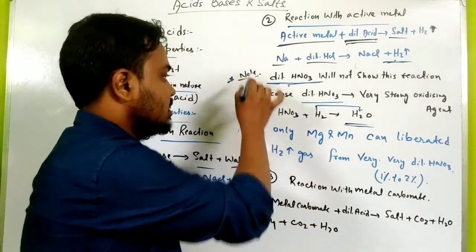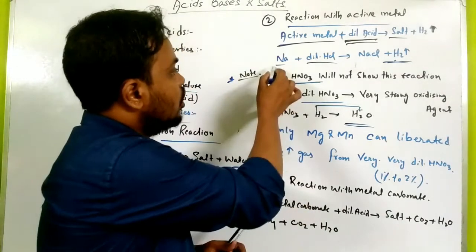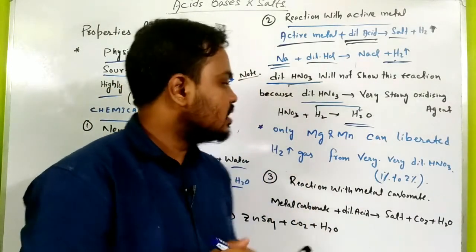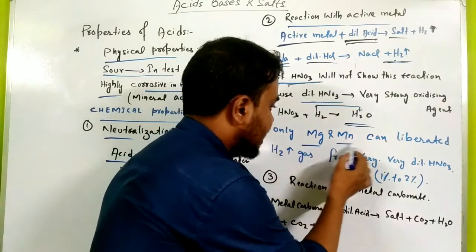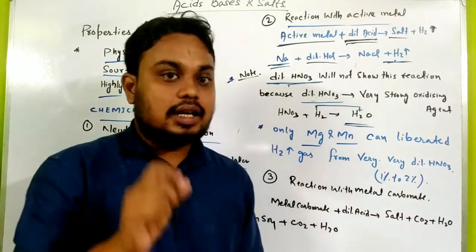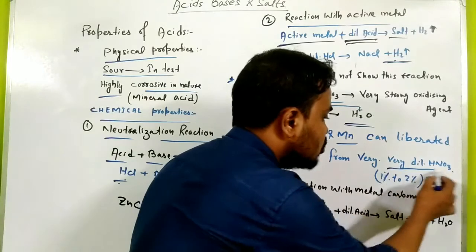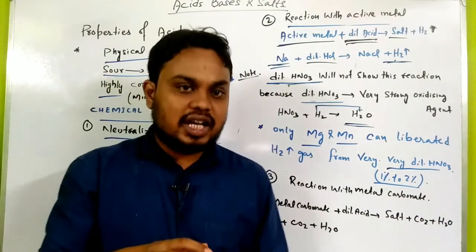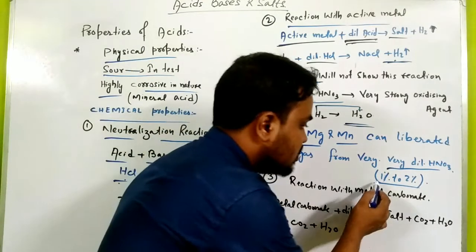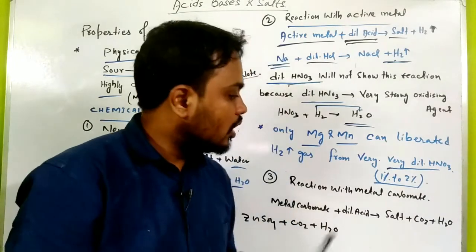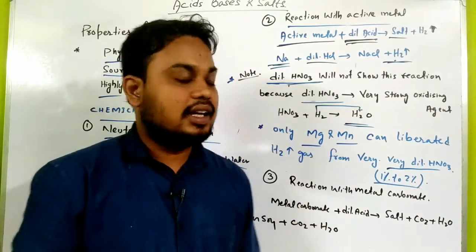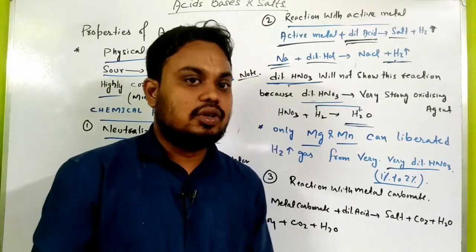Note this down: no metal liberates hydrogen gas when reacting with dilute HNO3. However, there is an exception: when the percentage of HNO3 is very low — only 1-3% concentrated — its oxidizing power is very low. In that case, if you react magnesium with dilute HNO3 (1-3%), hydrogen is liberated.